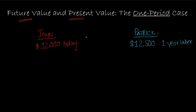Let's make the simplifying assumption that both John and Patrick are credible people — they will pay you. So John will give you $12,000 today, and Patrick will, 100% sure, give you $12,500 one year later. The question is: which offer do you accept?